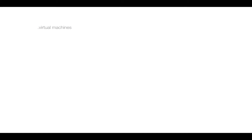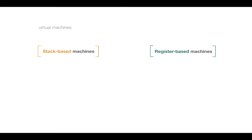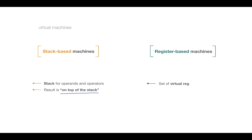When we talk about virtual machines we differentiate stack-based machines and register-based machines. In the stack-based case, we have a stack and the convention is that the result is always on top of the stack after each instruction. In contrast, register-based machines operate on a set of virtual registers — just data storage. On physical machines registers are located directly on the CPU, while in a virtual machine they might simply be a storage for variables.